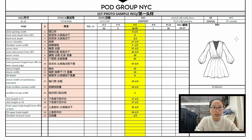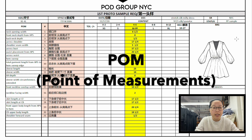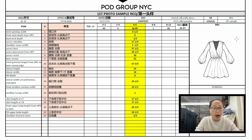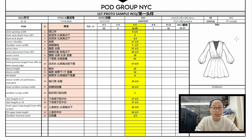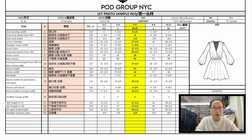The spec sheet will have a list of POMs — Points of Measurement. Each POM tells the pattern maker how to create the first draft of the pattern based on these reference measuring points. It will also be the checking point for technical designers to spec the garment once the first sample is complete, to make sure all measurements are in accordance with the spec sheet. Without detailed and accurate measurements, pattern makers can only estimate proportions based on sketches, which often won't match the designer's expectations.